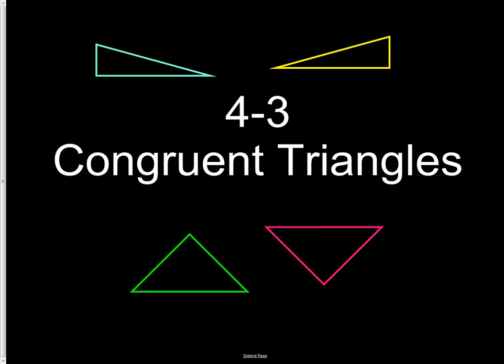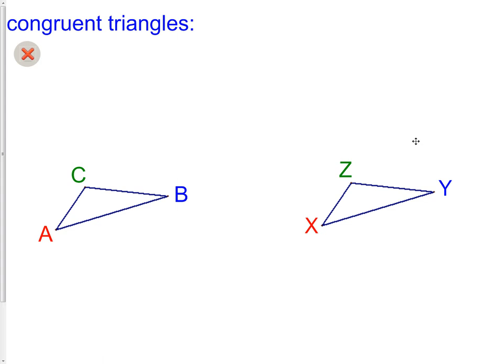Congruent Triangles. Congruent triangles are two triangles that are congruent, obvious from the name. But what does that actually mean?